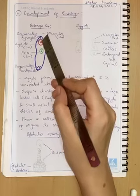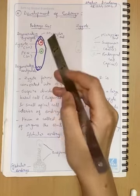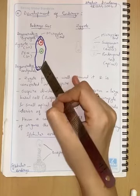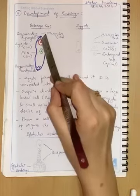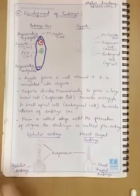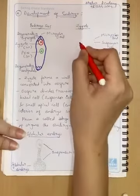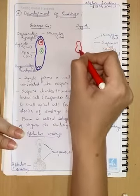After zygote formation, synergids have no function so they degenerate. Antipodals have no function so they degenerate. Now we will concentrate on this zygote - what changes occur and how embryo forms. So this zygote will slowly elongate.